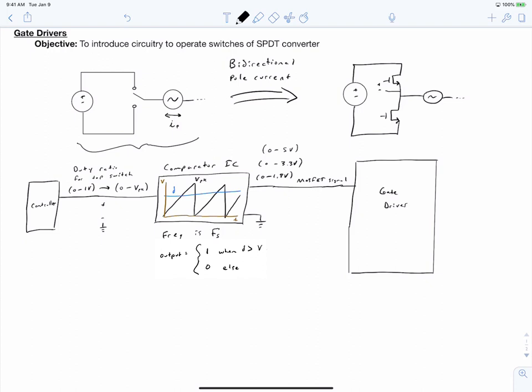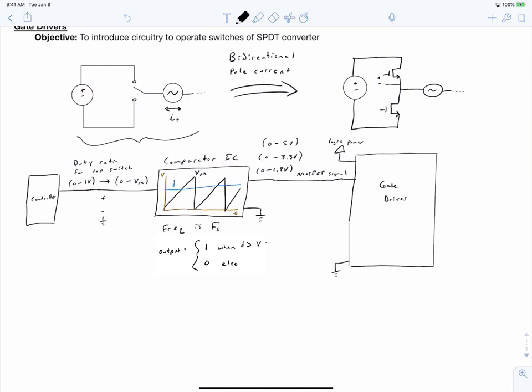The gate driver on its input side will be connected to the power source for the logic and to the common of our logic circuit. It reads in this MOSFET digital signal of 0 to 1.8 or 0 to 3.3 volts, and it's going to output a signal to the gate of the MOSFET.